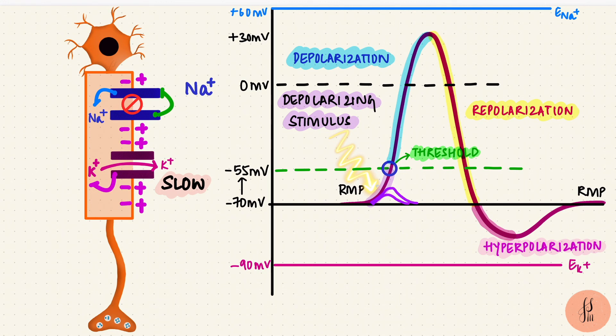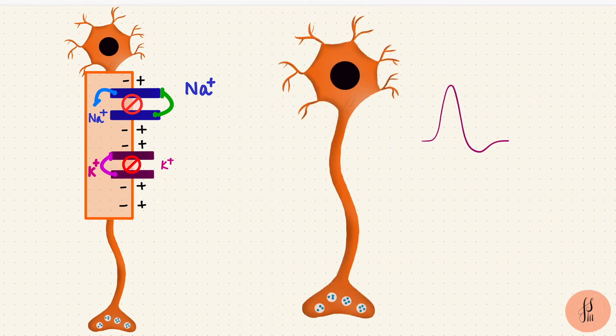Once the gates close, the ions can't pass through this channel anymore, and we come back up to the resting membrane potential again. So the curve comes back up to RMP. That is one action potential.